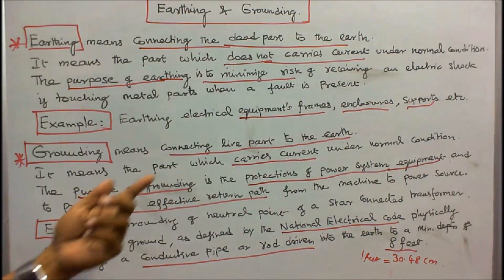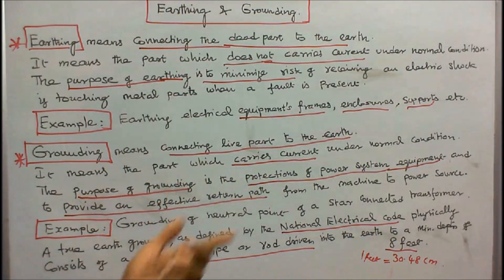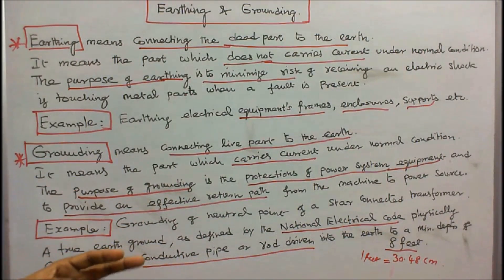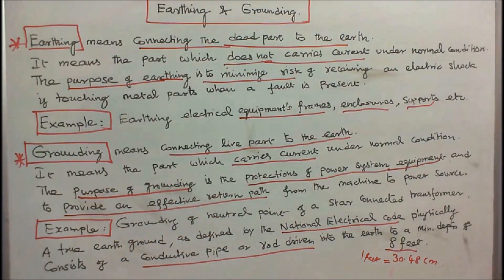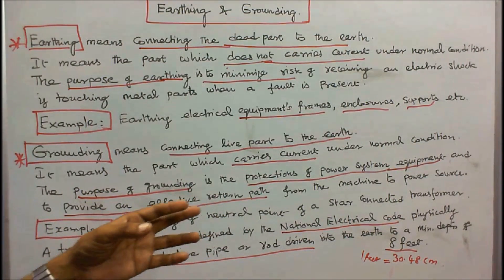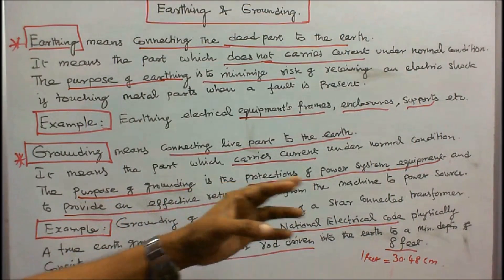Grounding means connecting live part to the earth. It means the part which carries current under normal condition. The purpose of grounding is the protection of power system equipment and to provide an effective return path from the machine to power source.